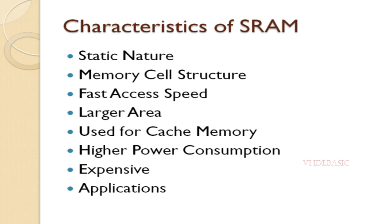This can limit its use in devices with stringent power constraints such as mobile devices. Expensive: the manufacturing process of SRAM is more complex and expensive than that of DRAM, contributing to its higher cost. Applications: apart from cache memory in processors, SRAM is also used in networking devices, graphic cards, and other systems where fast and efficient memory access is required. It's important to note that SRAM provides volatile storage, meaning its content is lost when power is removed. For non-volatile memory, technologies like flash RAM or hard drives would be more suitable.